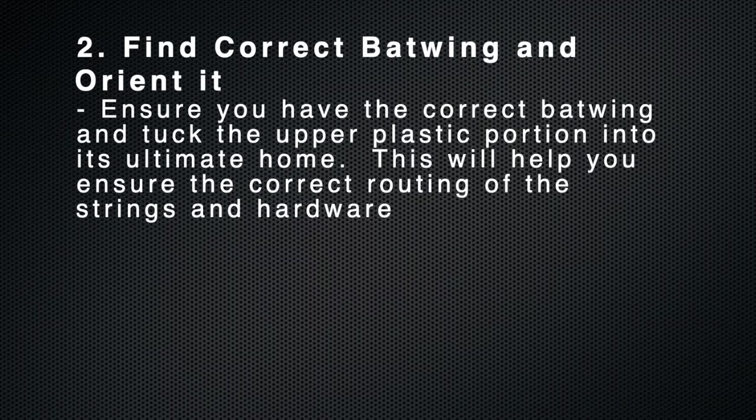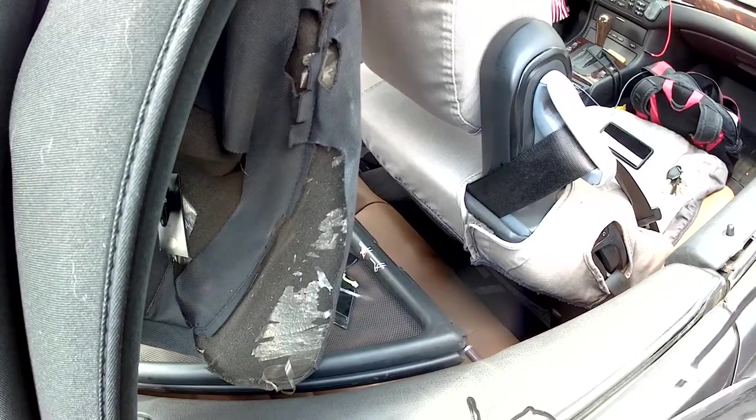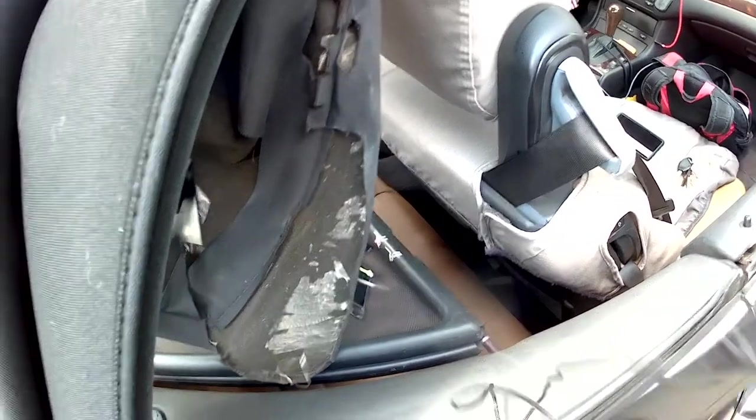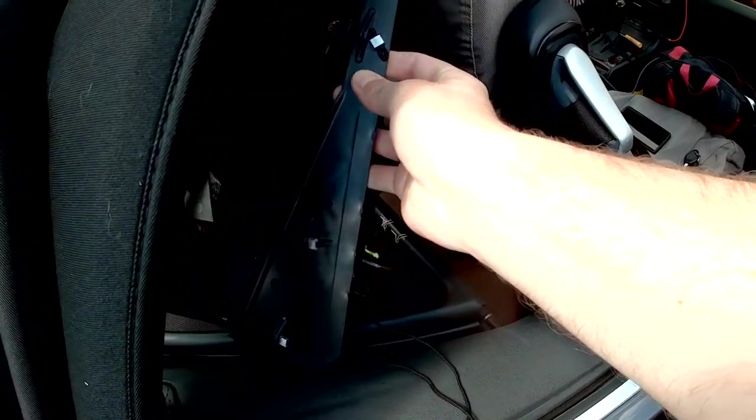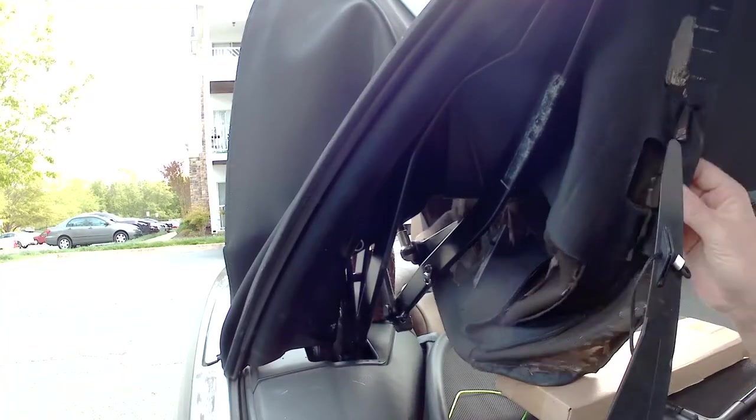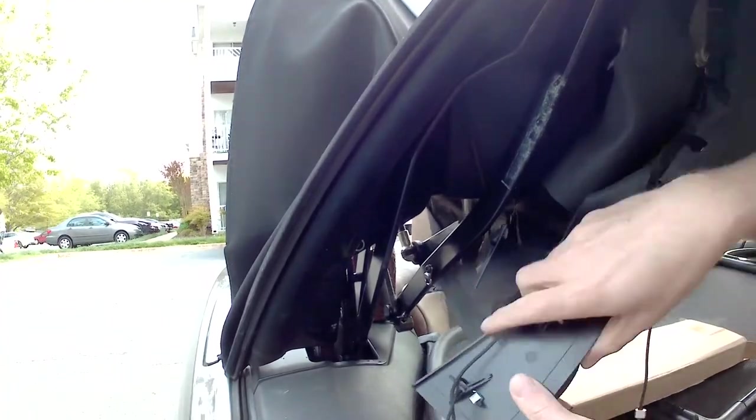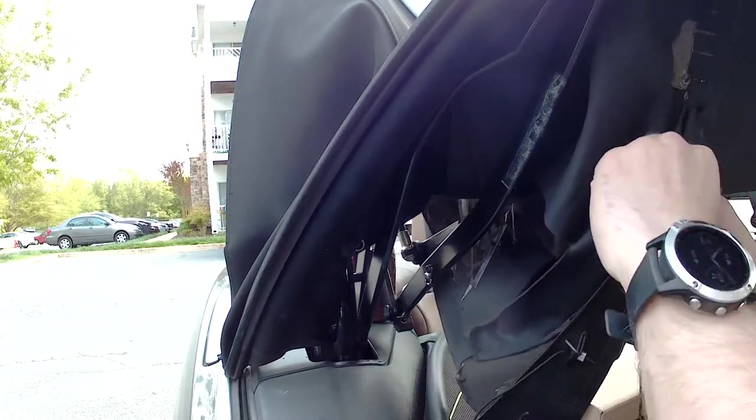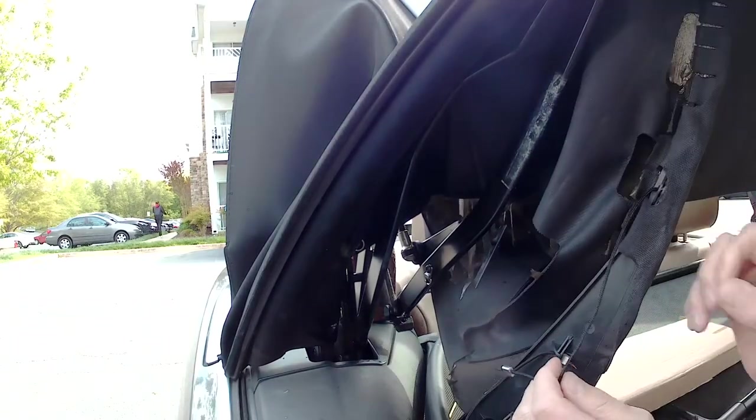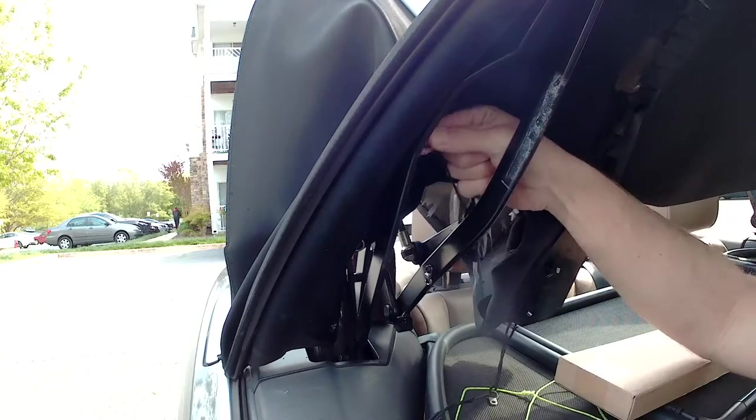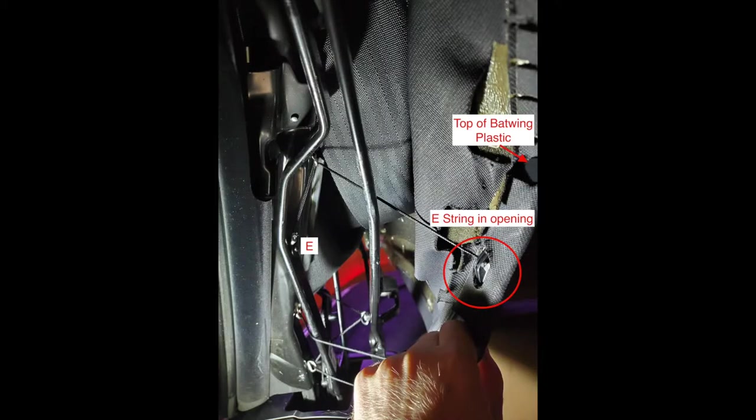Step two is to find the correct batwing and orient it. Remember that the grommets and the strings will ultimately face toward the rear of the car. Once you've found the correct batwing, go ahead and slide it up into the opening so that you can ultimately see the top of the plastic right at the very top and the final top string is in its little opening like the diagram shown here.